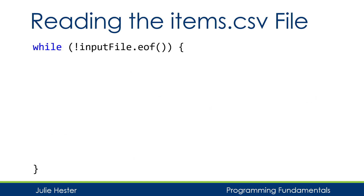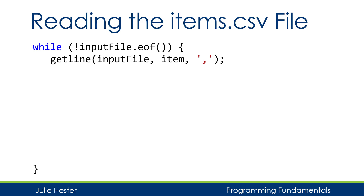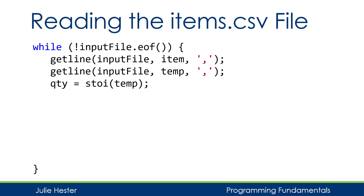Here's how we read the items.csv file. Because I'm reading one field at a time, I'll check for the end-of-file flag as my while loop test condition. As long as I'm not at the end of the file, I'll call getline to get the first field of the current record — which is a string — saving it in string variable item, reading through and discarding the comma. Then I'll read the next field, which is an integer, into variable temp, followed by a conversion using stoi, saving the converted value in quantity.